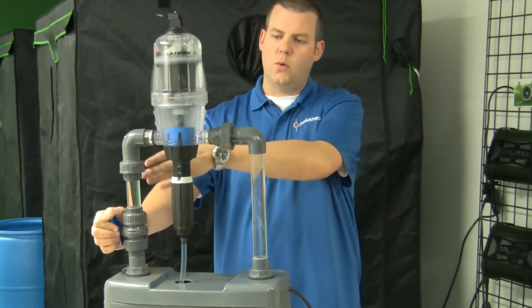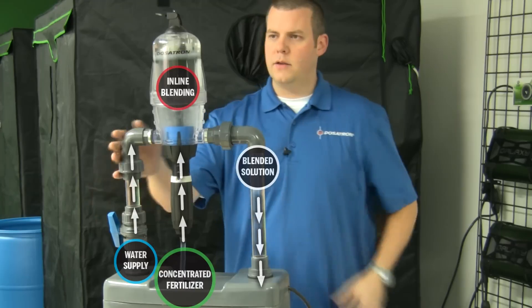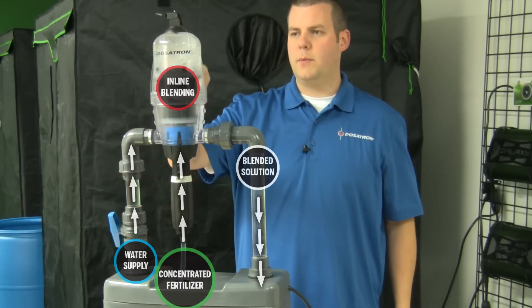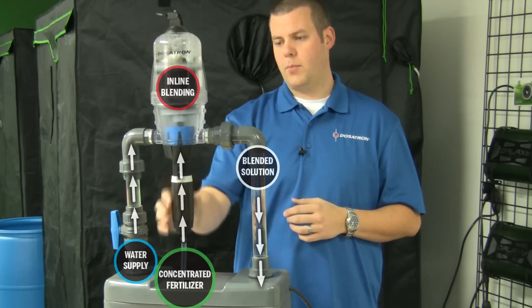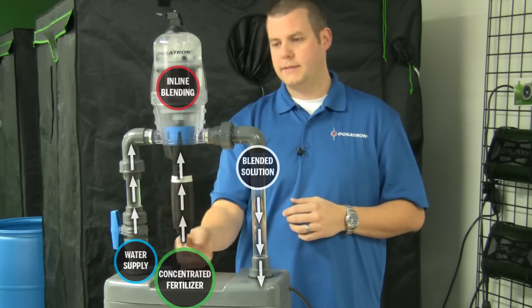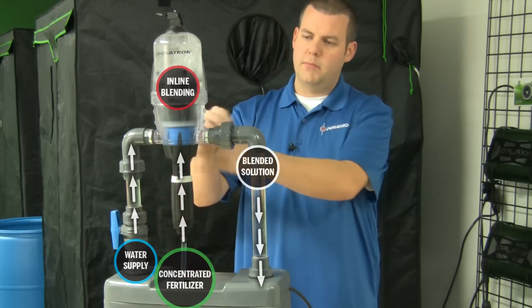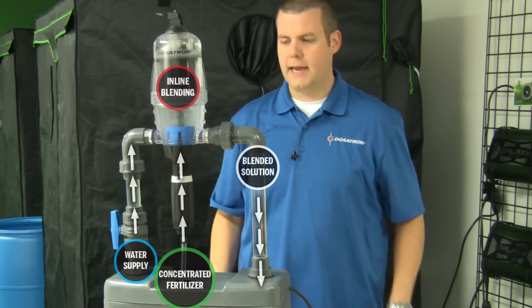Now you can see that the water is coming through the unit and you can see that piston moving up and down, pulling up that product from the base and drawing that concentrate, blending it in line and putting it out exactly how we want it.